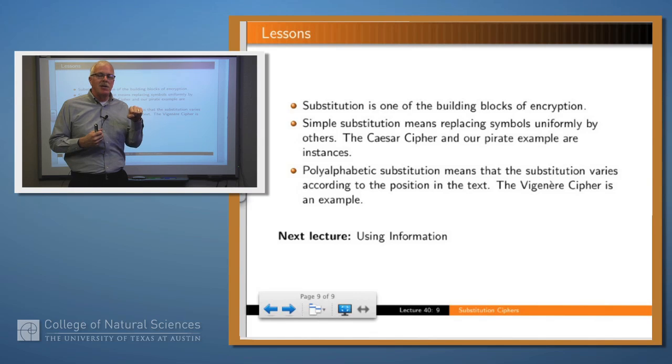And polyalphabetic substitution means that we do that kind of a substitution, but the substitution that we make or the replacement that we make depends upon the location of the plain text character within the text. And so A here may get an X and A here may get an R. And that makes it much harder to decrypt the ciphertext. Thank you.